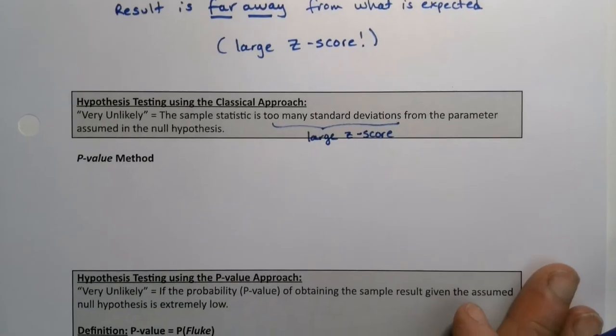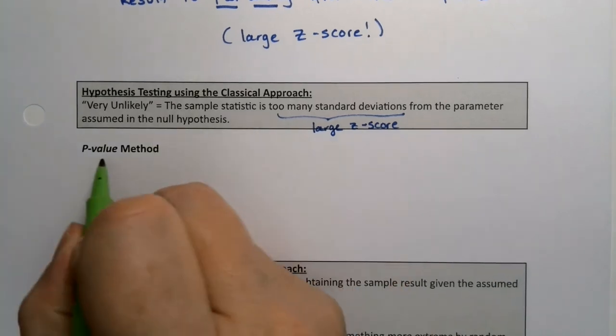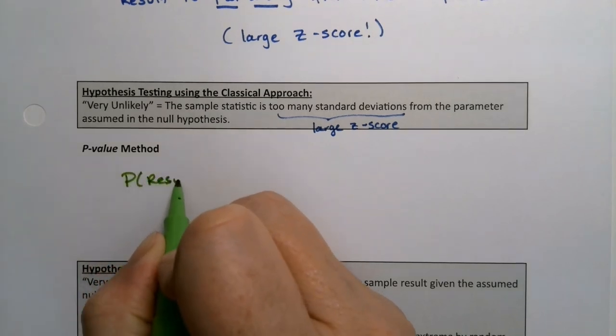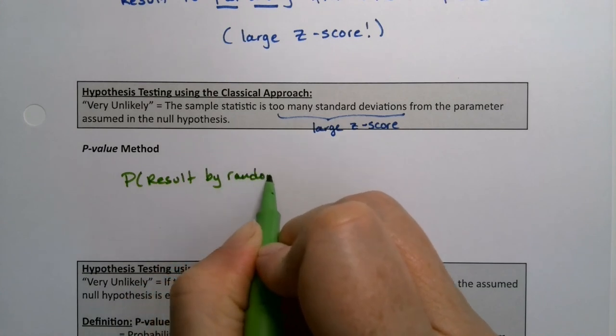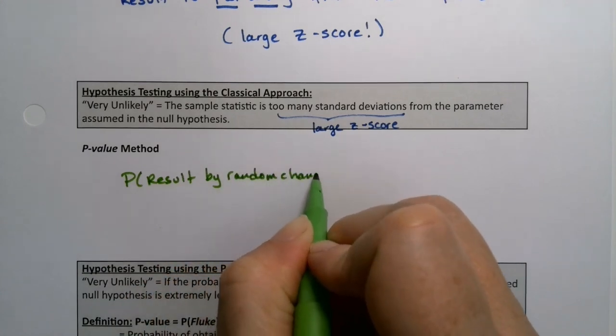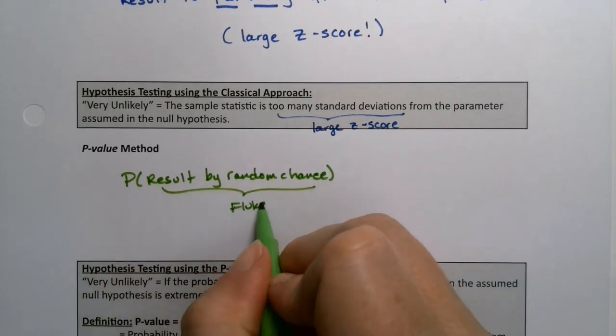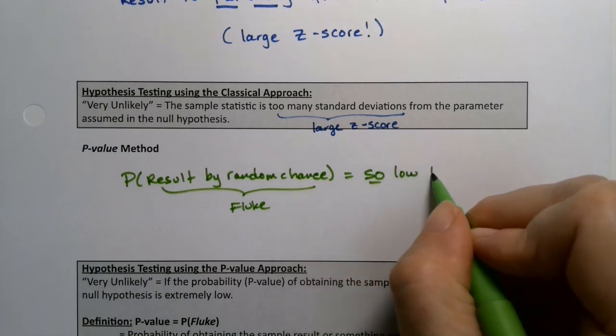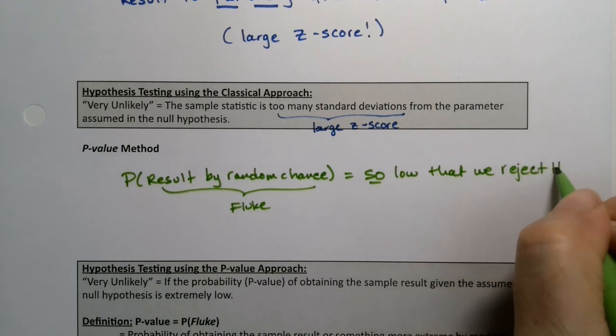The method we are going to use is the p-value method, which is the probability of a fluke. So if the probability of the result by random chance is so low that we reject H₀ and we decide that the parameter is wrong instead.